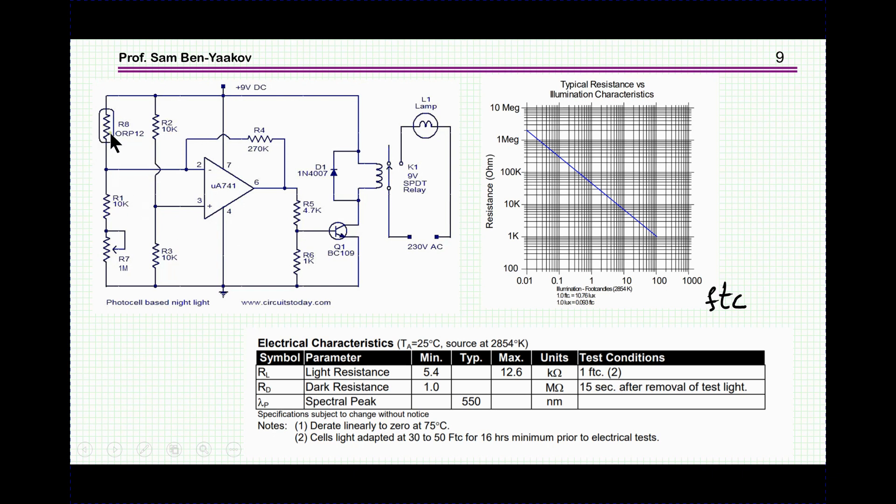When the ambient light is high, then this is low resistance, so this would be much higher than halfway, and therefore it will have a low output. And this low output will not turn on the transistor or keep it off.